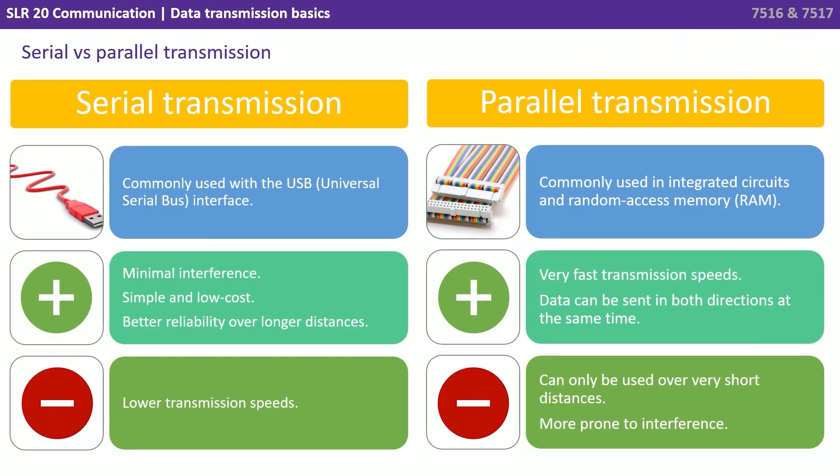You need to be able to compare the two and understand the advantages and disadvantages of each. Serial transmission is commonly used with USB, the universal serial bus interface. It has minimal interference, it's simple and low cost, and it has better reliability over long distances, but it has lower transmission speeds. Parallel is commonly used in integrated circuits and RAM. It has very fast transmission speeds and data can be sent in both directions at the same time, but it can only be used over very short distances and is more prone to interference.